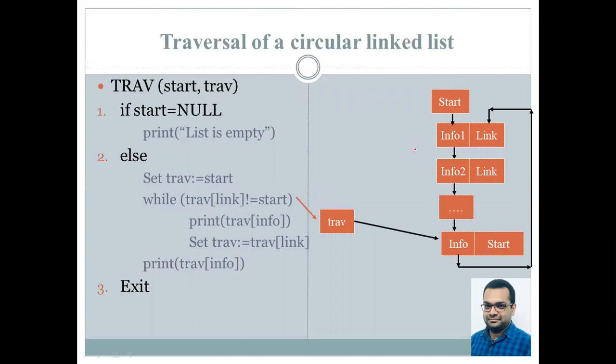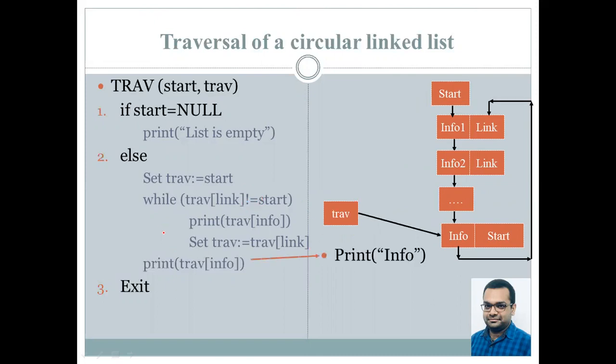Now we again check and keep on progressing further and printing out the values till we reach the last node where traversal's link becomes equal to start. So this condition of not equal to inside the while loop will be false. So these statements will not be executed and our while loop exits. So we simply print the information in the last node, that is you print the info which is over here given as the info, and program exits.